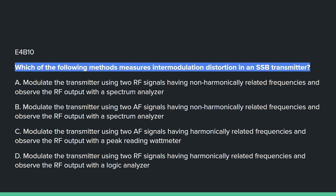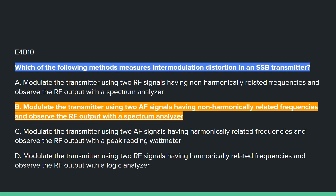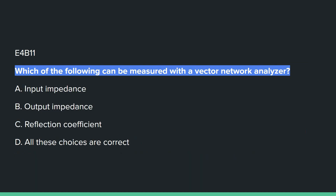E4B10: Which of the following methods measures intermodulation distortion in an SSB transmitter? Answer B: modulate the transmitter using two AF signals having non-harmonically related frequencies and observe the RF output with a spectrum analyzer.